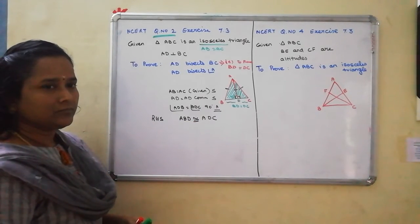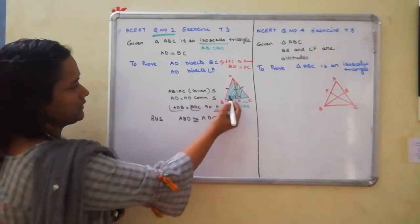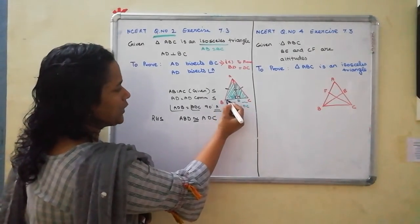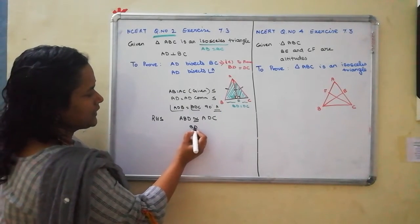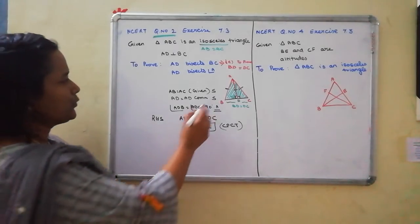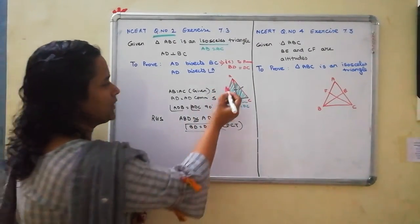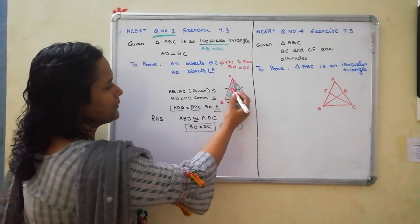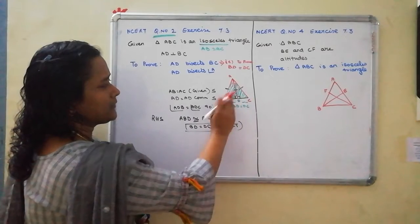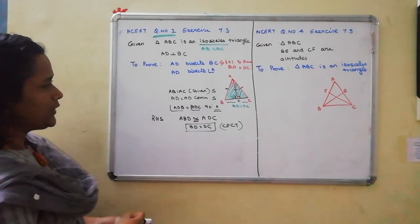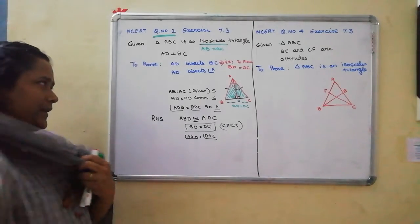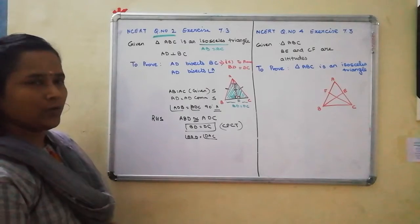Once we prove congruence, AD bisects DC — this length will be equal — by using corresponding parts of congruent triangles, CPCT. And then we also need to prove AD bisects angle A. Since we already proved these 2 triangles are congruent, they can be overlapped with each other. Therefore, automatically the angles will be equal: angle BAD equal to angle DAC. Therefore, AD bisects angle A.